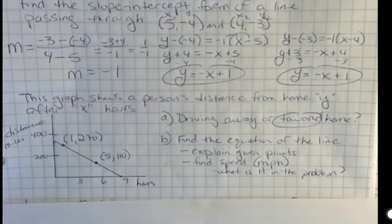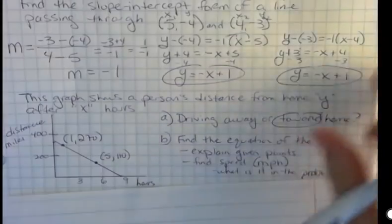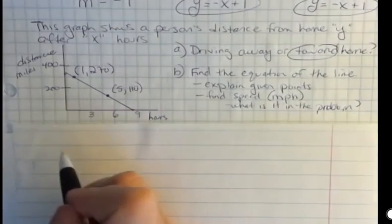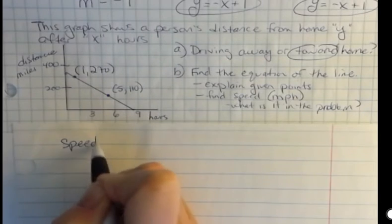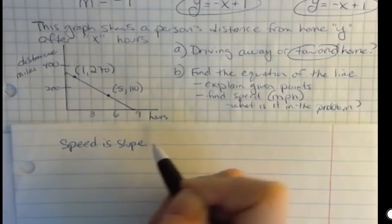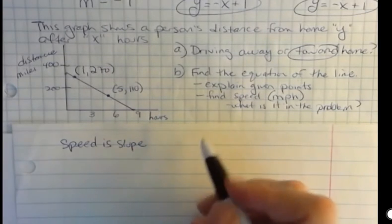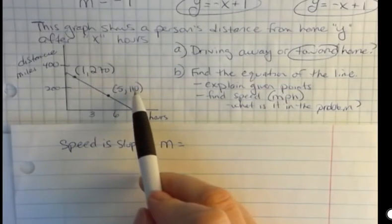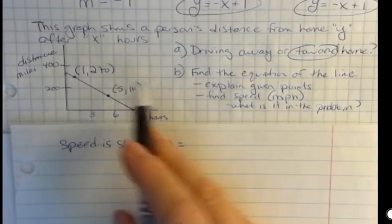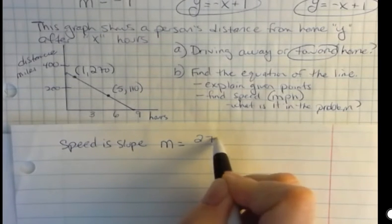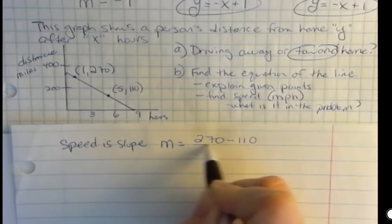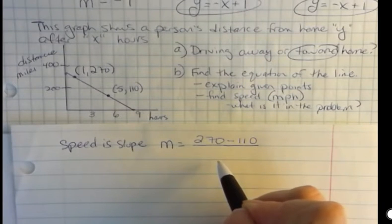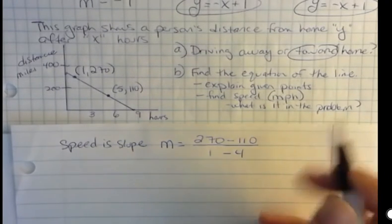So all they're really asking us here is to figure out the slope for this equation, and we will have the answer to that. And when I wrote this down, I forgot to leave space to work it out. So I'm going to work it on a separate piece of paper. So our speed is the slope. That's the rate of change. Remember, slope is a rate, and the rate of change of how far you are from home. So our slope is, I can start with either one of these points. I'm going to start with this one because it makes sense to me: 270 minus 110, that's the y's that I'm putting on top, and then I have one minus four on the bottom.